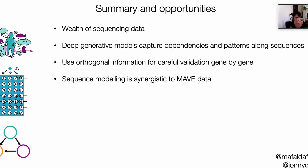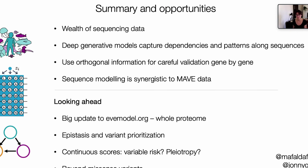I'm slightly over time, so I'll leave you with a summary. But I would just like to make some comments looking ahead. There will be a big update on our server where we release all of our results. We will have very soon EVE results for the entirety of the human proteome. And we're very interested in looking at epistasis — so far I was only talking about prediction for single variants, but looking at epistasis and also identifying variant prioritization for MAVEs is a direction we're very excited about in the lab.